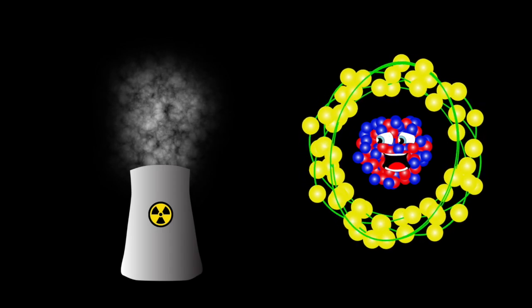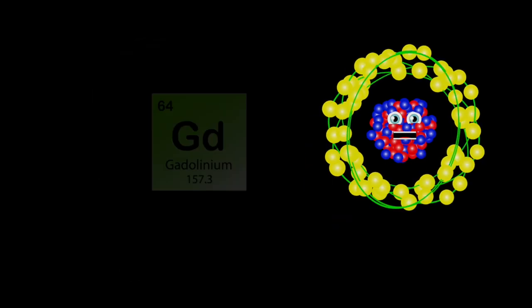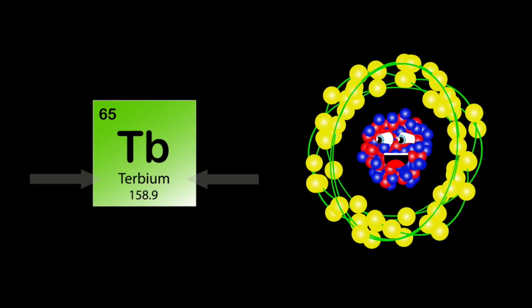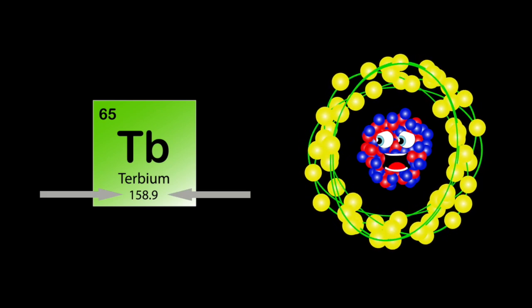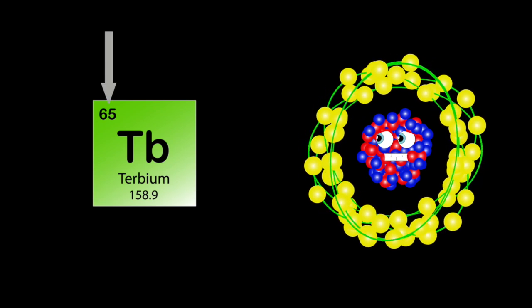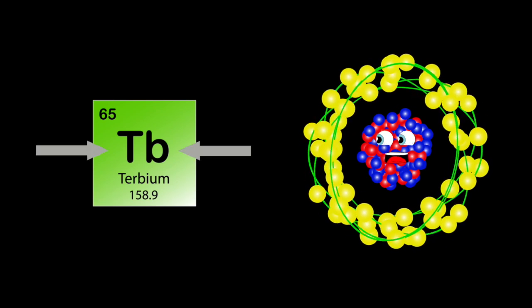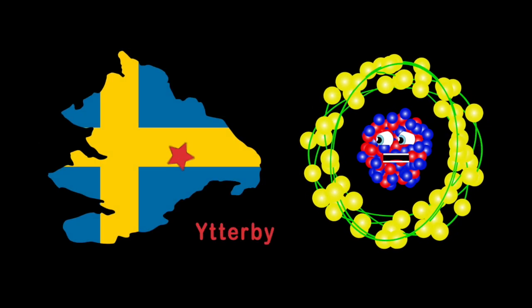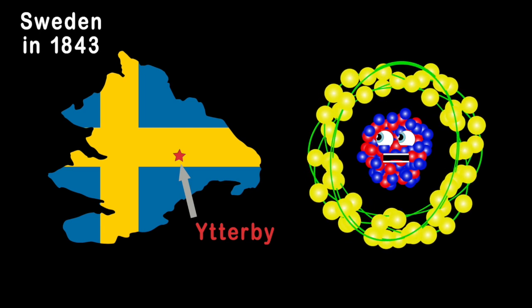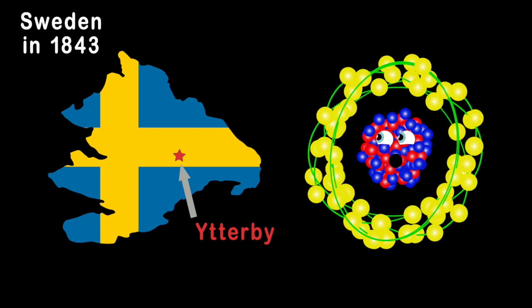I am terbium, my atomic mass is 158, my atomic number's 65, TB's my symbol, isn't that great? I was discovered in a quarry in a town called Ytterby, in a country of Sweden, in 1843.